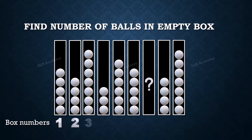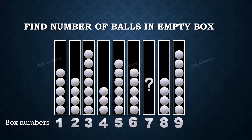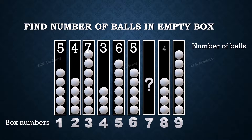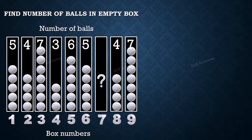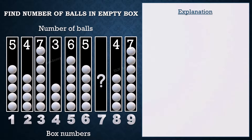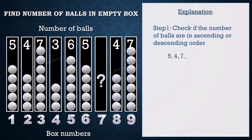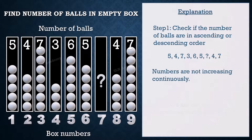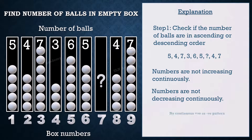Let us first see how many balls are present in each box. Step 1: Check if the number of balls are in ascending or descending order. Numbers are not increasing continuously and numbers are not decreasing continuously. So, there is no continuous positive or negative pattern here.